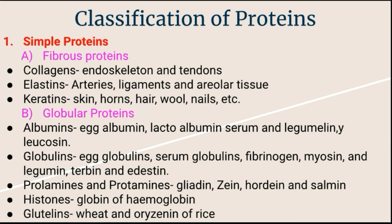Elastins are composed of thin elastic and branched fibers. This protein is found in the walls of arteries, ligaments, and areolar tissues. We know very well that arteries are muscular blood vessels that carry oxygenated blood away from the heart to the body.